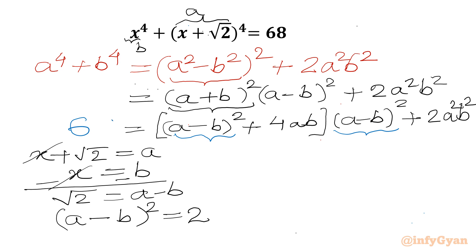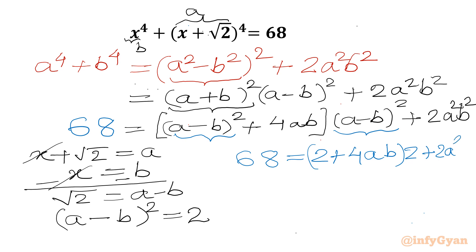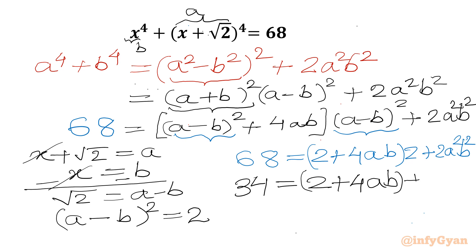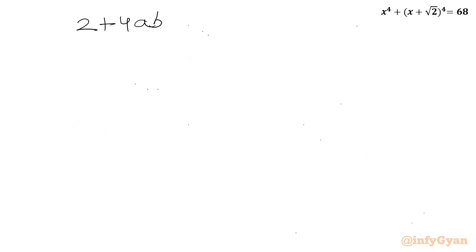The LHS equals 68. So we can write the equation as 68 = 2 + 4ab·2 + 2a²b². Dividing both sides by 2 gives 34 = 2 + 4ab + a²b².